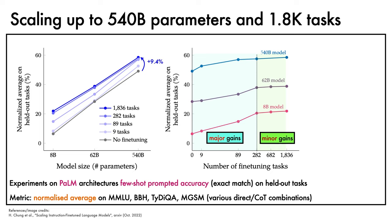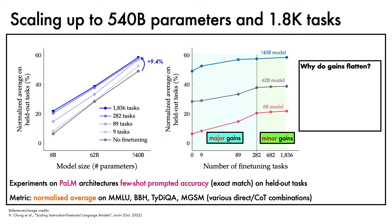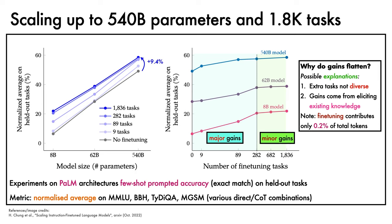It's interesting to ask why the gains flatten as the number of tasks increase. Some possible explanations include: one, the extra tasks are not very diverse, so they do not add much more signal; and two, the gains are driven by eliciting existing knowledge from the model, rather than putting new knowledge into the model. In support of this second explanation, note that fine-tuning only contributes 0.2% of the total tokens used to train the model. By contrast, we see that model scaling continues to deliver major gains in performance, without much sign of flattening.